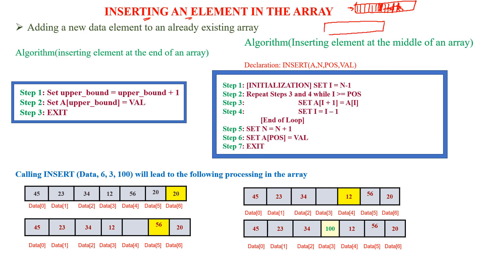So for this array, we are going to consider two cases. The array name is 'a' with indices 0, 1, 2, 3, 4, so the length will be 5 and the index will be 0 to 4. Case 1: if you want to insert an element at the end of the array, you just increase the upper bound or increase the index. Case 2: if you want to insert an element in the middle of the array.